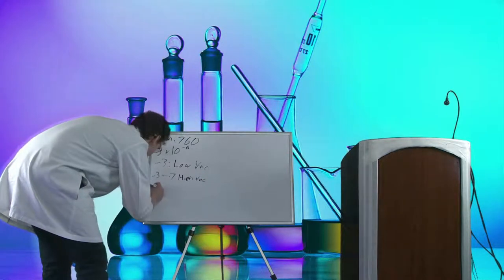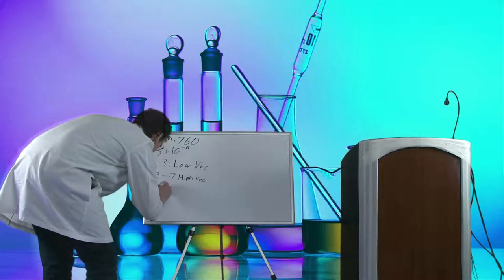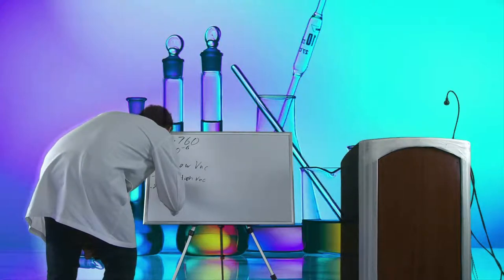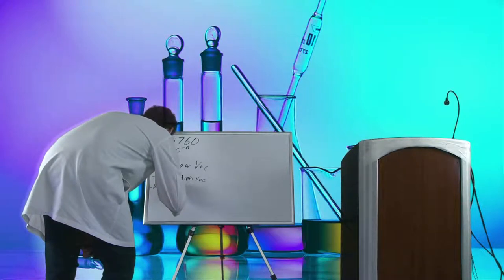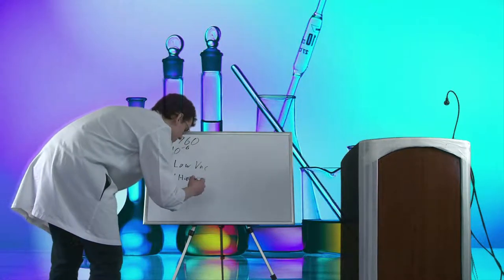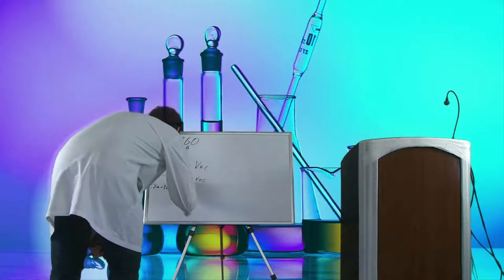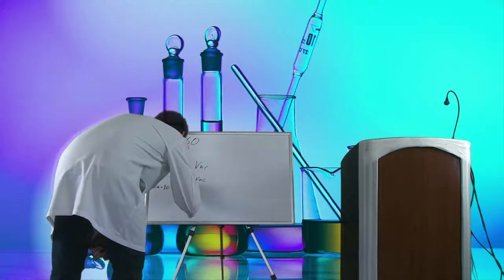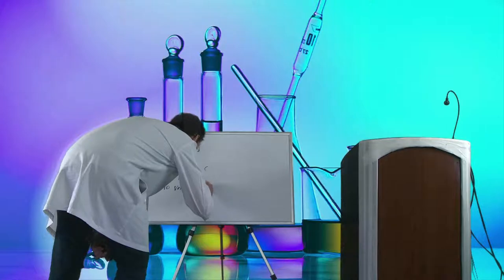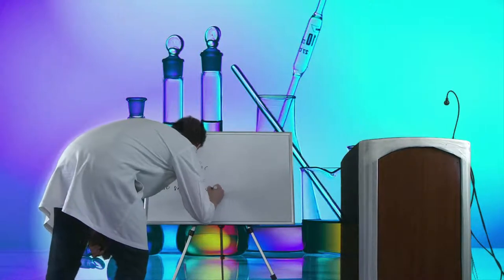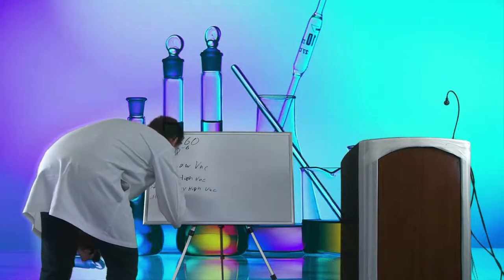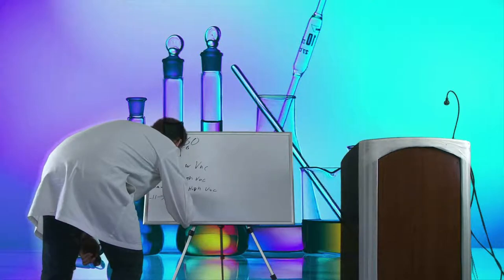Anything from the negative 8s to about the negative 10 to 11 range — it kind of varies depending on what you're doing — we'll call very high vacuum. We're very creative in naming these things. Anything beyond negative 10, so negative 11 and over, is ultra-high vacuum, abbreviated UHV.